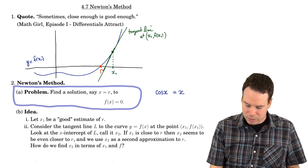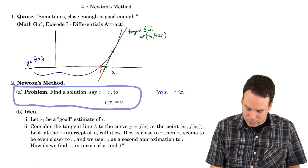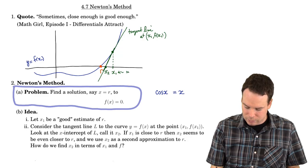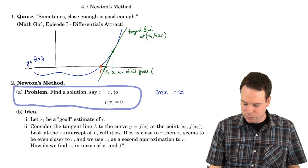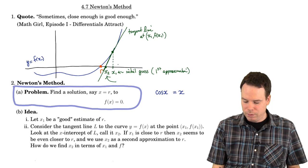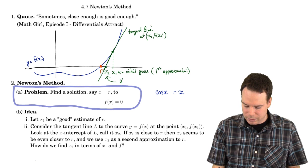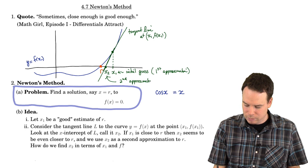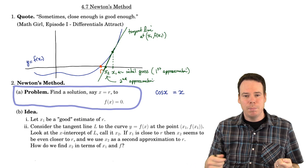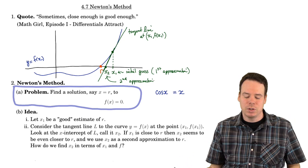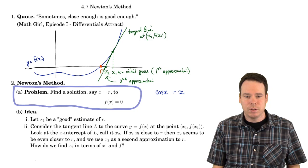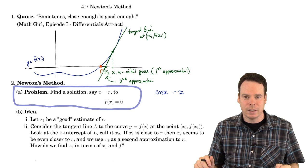We look at where the tangent line intersects the x-axis — its x-intercept — and call that x2. So x1 is our first approximation and through the tangent-line process we get x2, a second approximation. If everything is nice, the second approximation should be better than the first. The key question is: how do we find an expression for x2 given the initial guess x1?